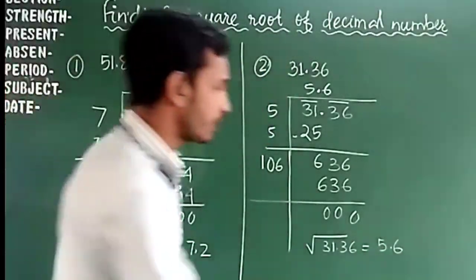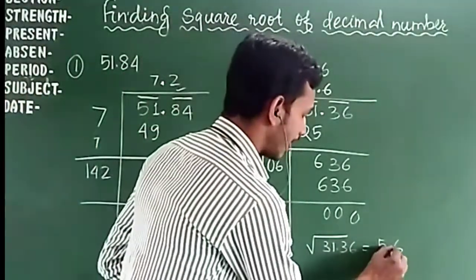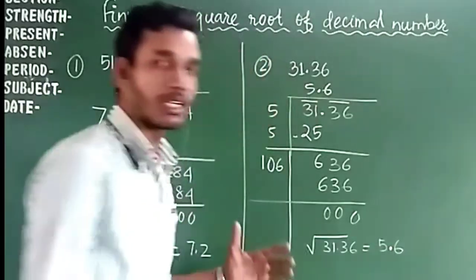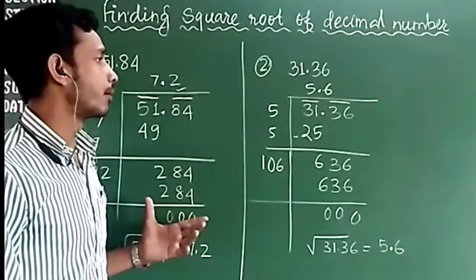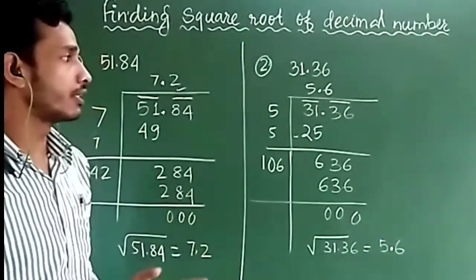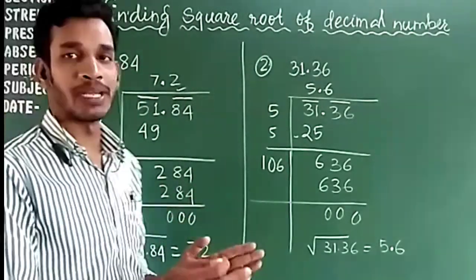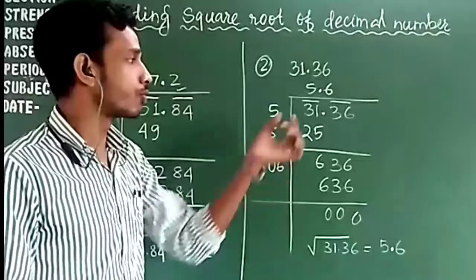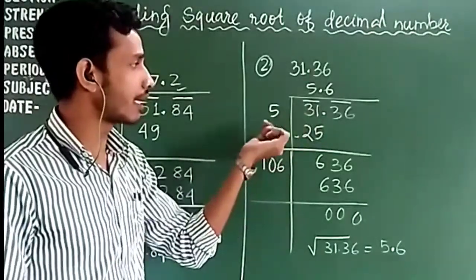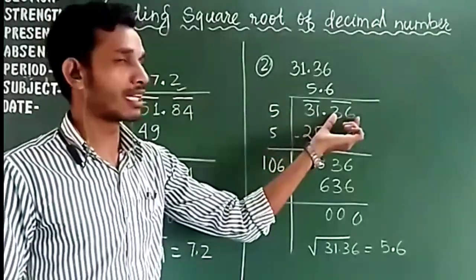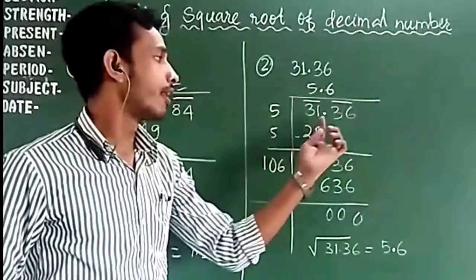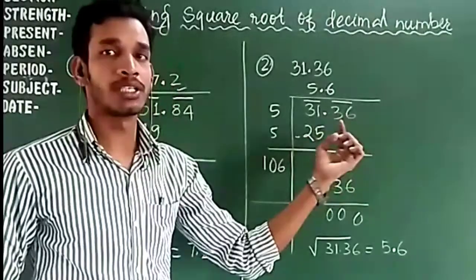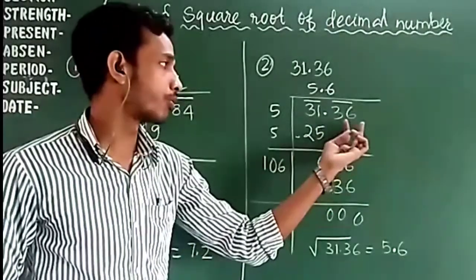I hope it is clear. We do it the same as for normal numbers. The only difference is how to make the groups: for the integral part we take pairs from the right side, and for the decimal part we take pairs from the left side.